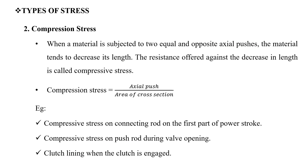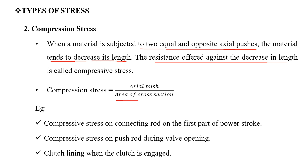Types of stress — second is compressive stress. The resistance offered against the decrease in length is called compressive stress. When a material is subjected to two equal and opposite axial pushes, the length decreases and the material offers resistance. Compressive stress is equal to axial push divided by area of cross section.